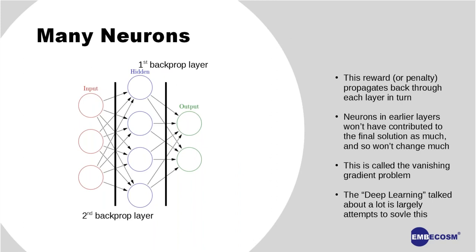This gets more complicated with many neurons. When we have a large number of interconnected neurons in multiple layers, back propagation becomes more involved — I sort the back propagation for one layer at once, then propagate that error back to the layer before, and so on. An interesting issue in larger networks with more hidden layers is that neurons earlier in the network, closer to the input, won't contribute as much to the final output, so back propagation won't penalize or reward them much. We call this the vanishing gradient problem, and deep learning is largely an attempt to solve it.